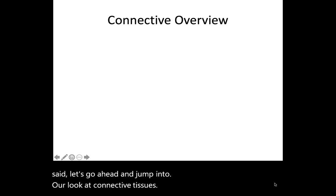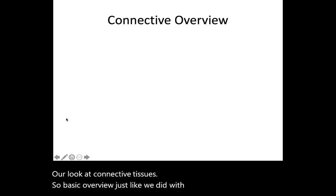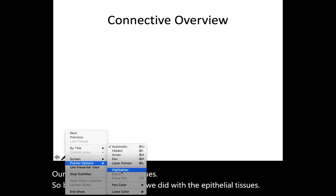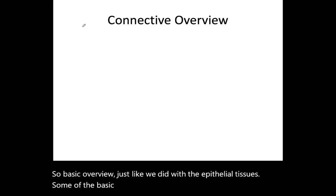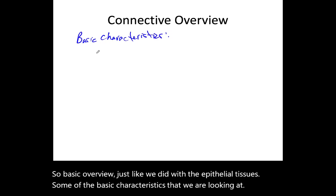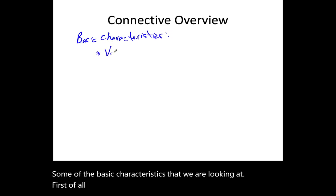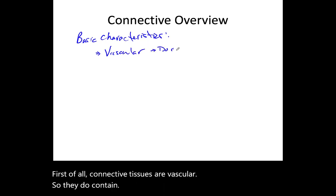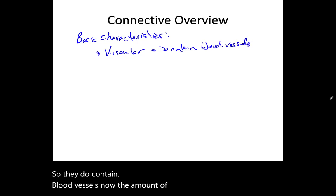So basic overview, just like we did with the epithelial tissues. Some of the basic characteristics that we are looking at. First of all, connective tissues are vascular, so they do contain blood vessels.